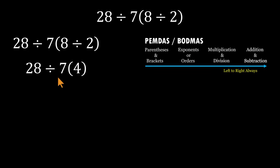So now the expression becomes 28 divided by 7 times 4. This is exactly where the mistakes happen. We've got a division and a multiplication sitting side by side. These operations share equal priority, so we go left to right. Start at the left. 28 divided by 7 is 4. Now keep going. 4 times 4 equals 16.